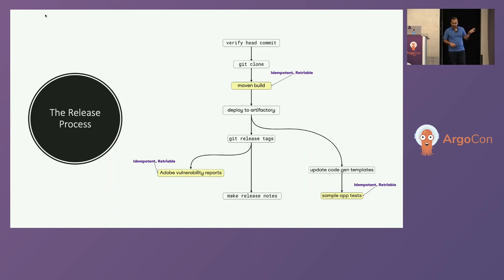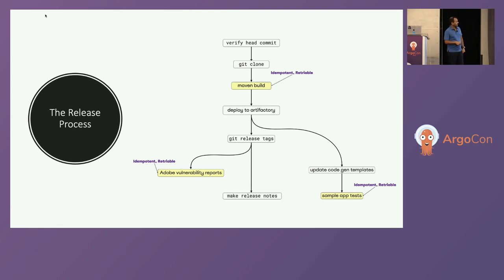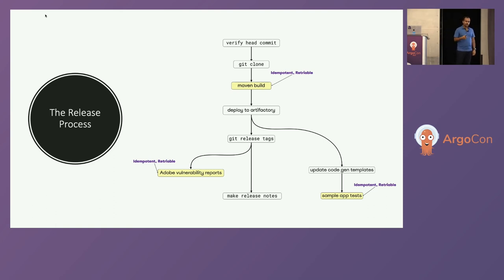The release process is where I really got to use the power of Argo workflows, because I could parallelize a lot of tasks. Before, I had to babysit each step manually. Now I have a complex workflow where I can parallelize certain things that were linear before. Some steps are idempotent and retriable — if you're talking to GitHub and enterprise GitHub is down, or the Adobe security dashboard is under heavy load and their SLA differs from ours, you can throw in retries. This doesn't necessarily speed things up but it helps you be hands-off.